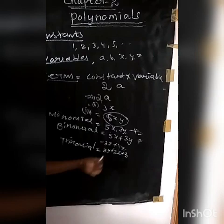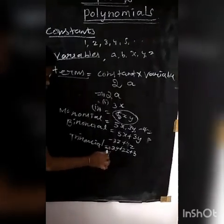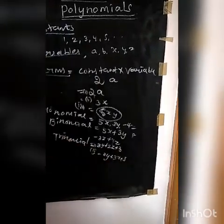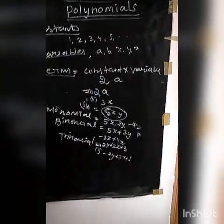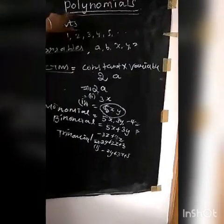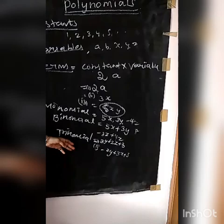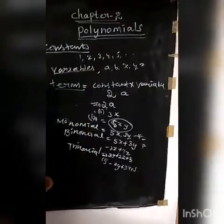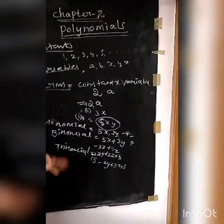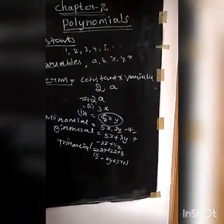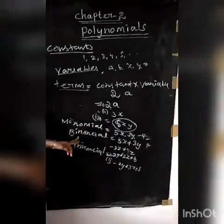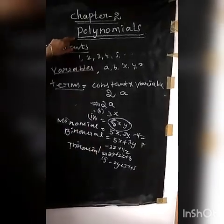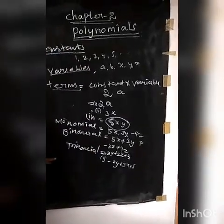For example, minus 2Y plus 3X plus 5Z is also a trinomial. So to summarize: monomial means one term, binomial means two terms, trinomial means three terms, and a polynomial has three or more terms.